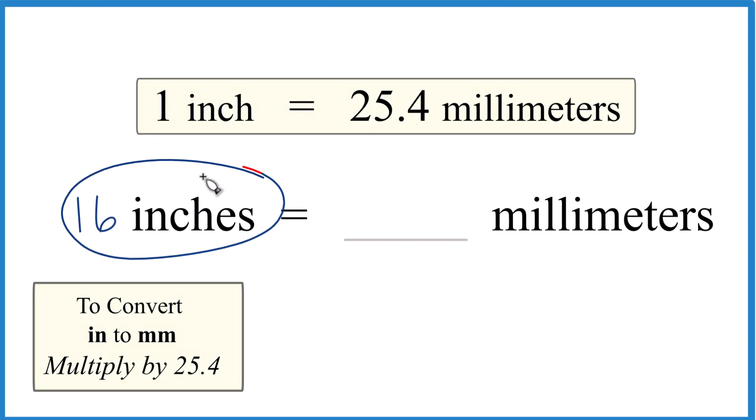Let's convert 16 inches to millimeters. Here's how we do it. One inch equals 25.4 millimeters - this is what we need to know.